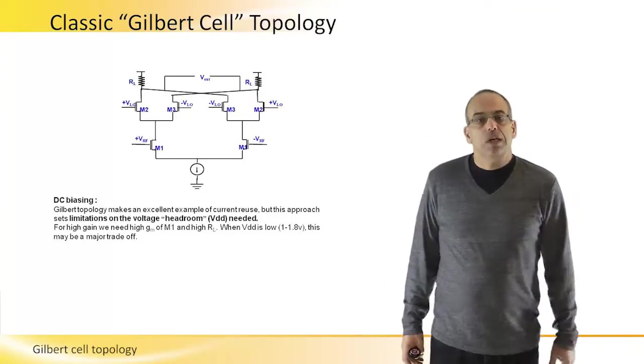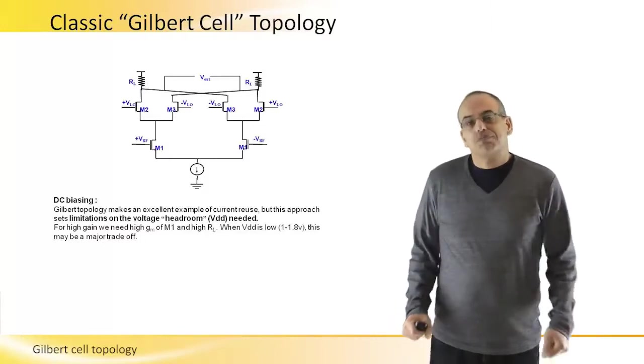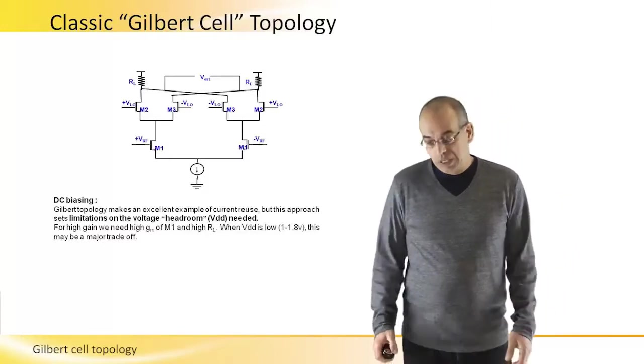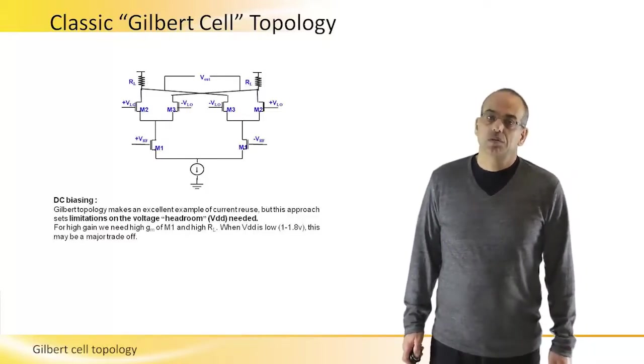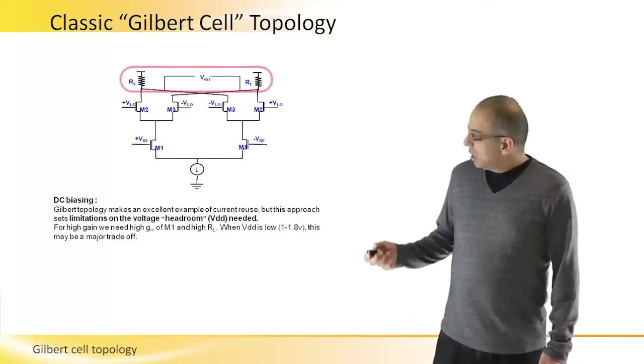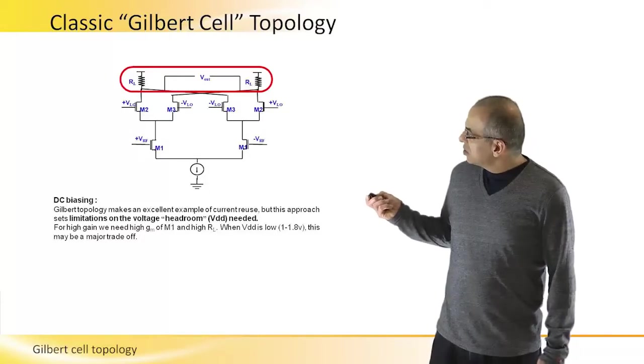I mentioned the loads here. Here we can see them as resistive, just to indicate that in down converters we cannot have inductors here because we'd have huge inductors.